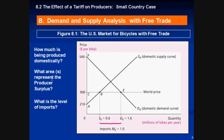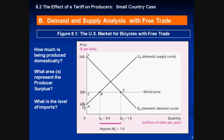What area represents producer surplus? This is the world price line — the area below it and above the supply curve. You can calculate that by finding the area of the triangle: (300 minus 210) times 0.6, divided by 2. What is the level of imports? The difference between what is being produced and what is being consumed — there's a shortage, so imports will equal exactly 1 million.